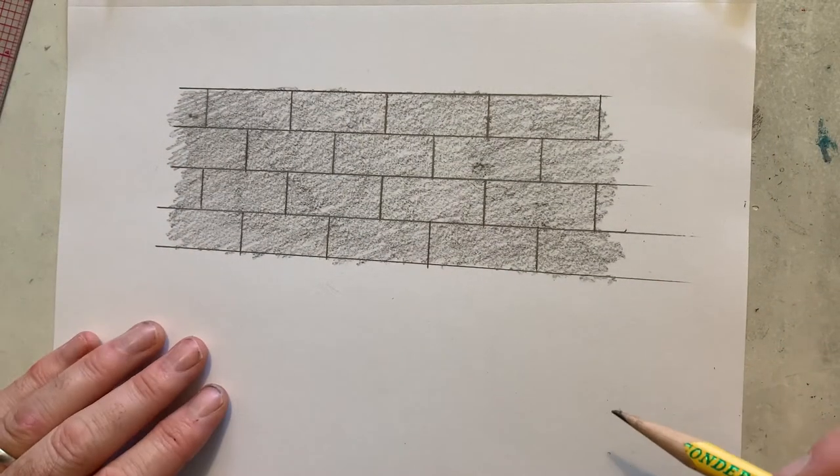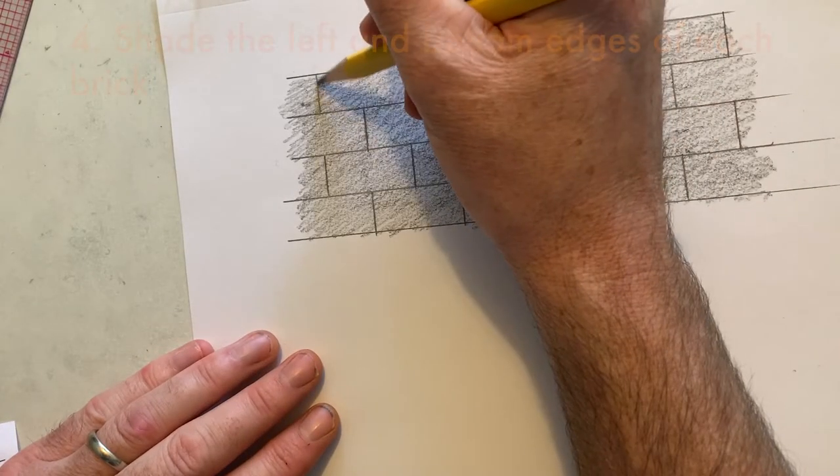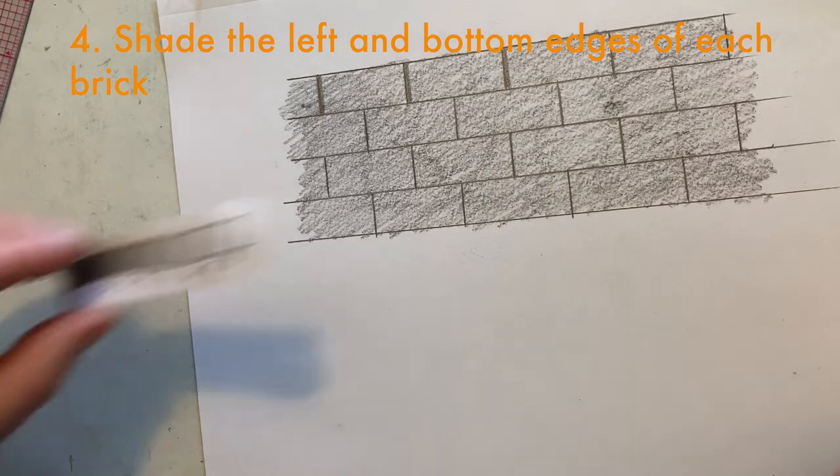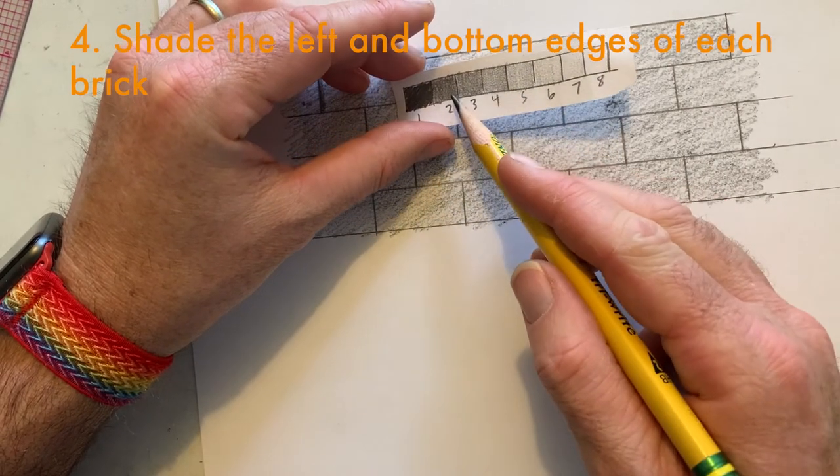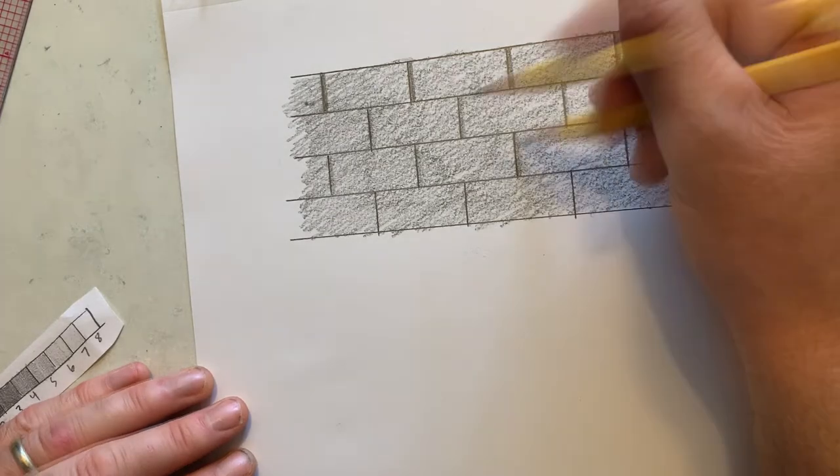So I'll go in and shade the inside of each brick on the left side. Then I'll go back in and do the same thing for the bottom of each brick, going right up next to those lines that I drew earlier. For the sake of efficiency, I'll shade the left side of each brick first, and I'm just going in with maybe like a 2 here. I'm not going like full 1, just making them pretty dark though.